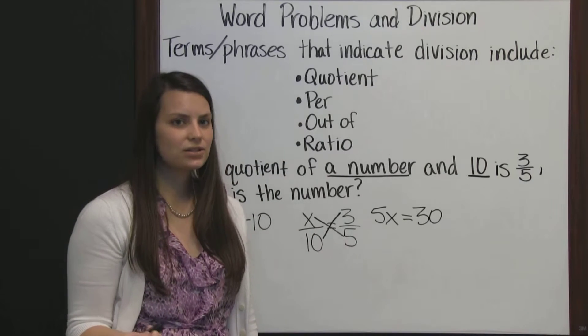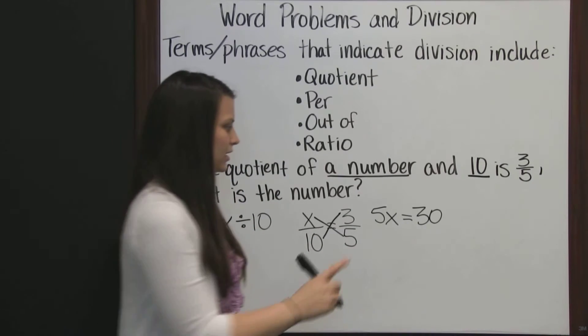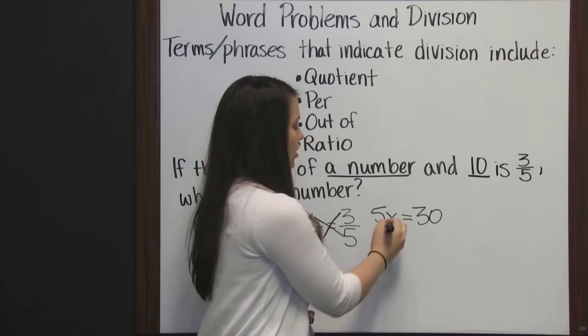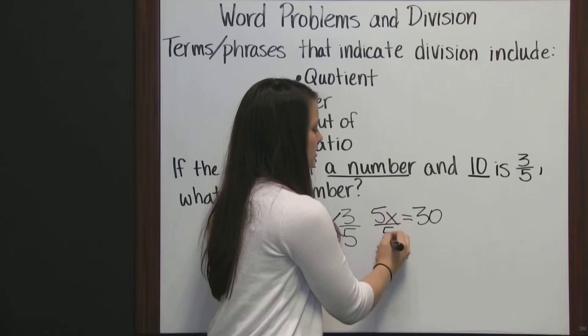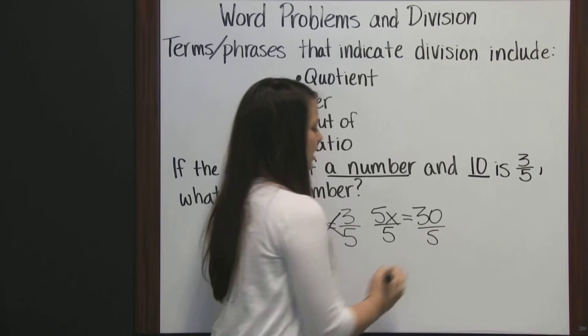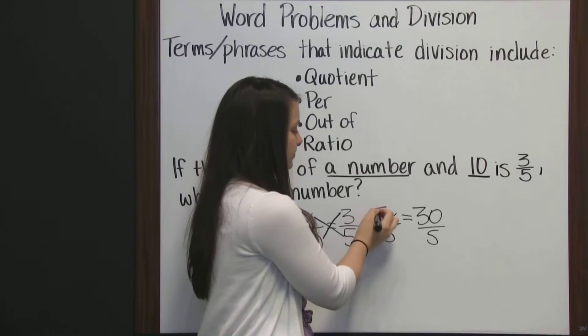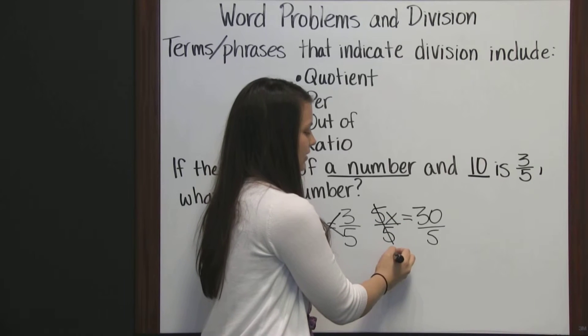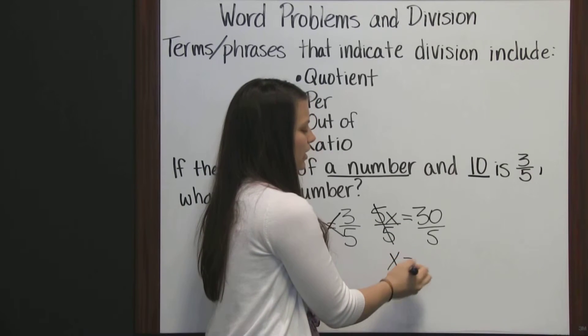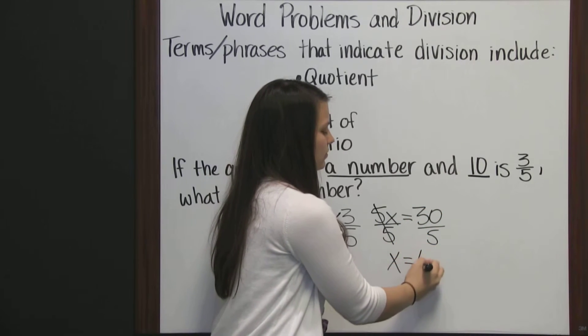And now we need to solve for x. This is five times x. And the opposite of multiplying is dividing. So we divide both sides by five. Five divided by five is one. One times x is x. And that equals thirty divided by five, which is six.